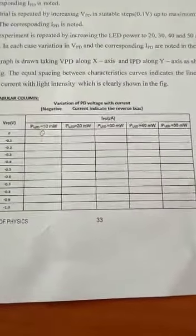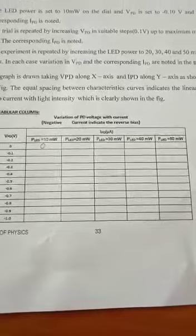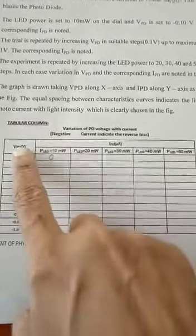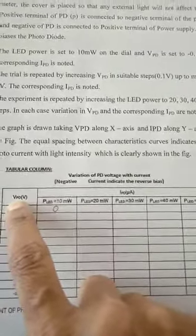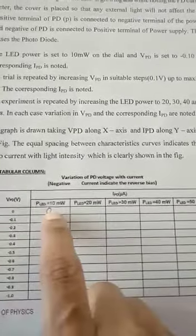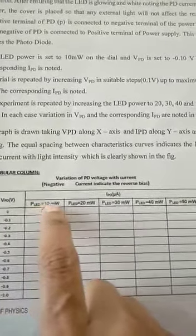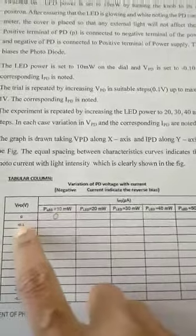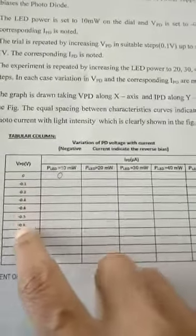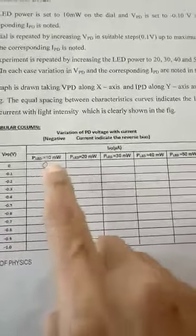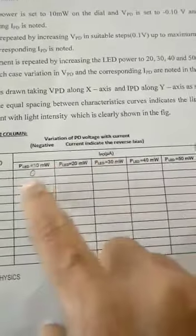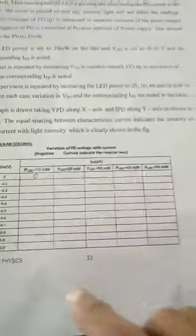This is the tabular column which we need to fill. For the initial reading, the light given to the photodiode is zero. P_LED is set to 10 milliwatts. Now increase the voltage in steps of 0.1 V and note down the corresponding microammeter reading. For 0.1 V, we will see what the reading is.